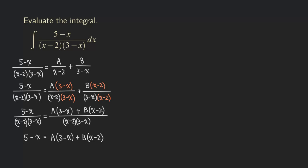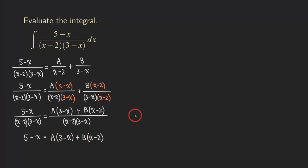Now we need to solve this equation to find A and B. There are actually two ways to do it. I'm going to show you both ways for this example. For later examples with more complicated rational functions, I'll use a combination of both — whichever approach is easier — to find the coefficients.